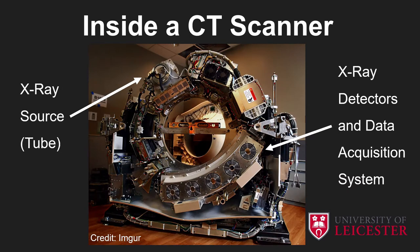Inside the scanner is clearly a much more complicated business. At the top you have the x-ray source or tube, with lots of equipment to support it, cool it down, and supply it with a very high voltage. X-rays are produced there, they travel in a straight line through the centre of the scanner to an array of detectors and the data acquisition system, where the first stages of image production occur. This whole gantry spins around the patient at very high speed.